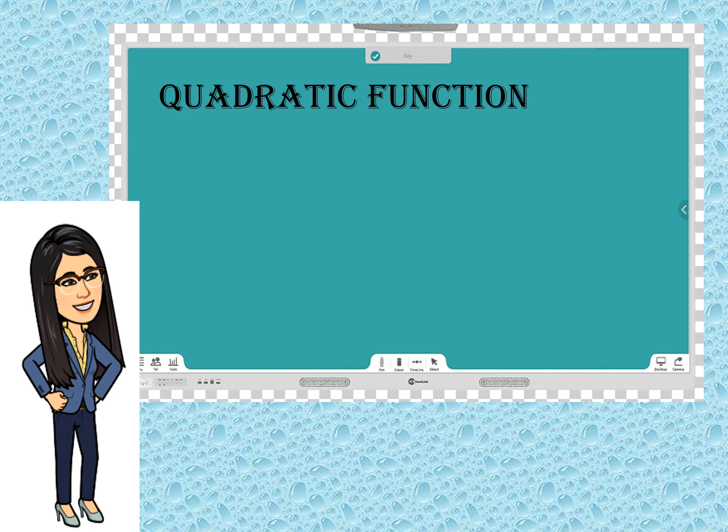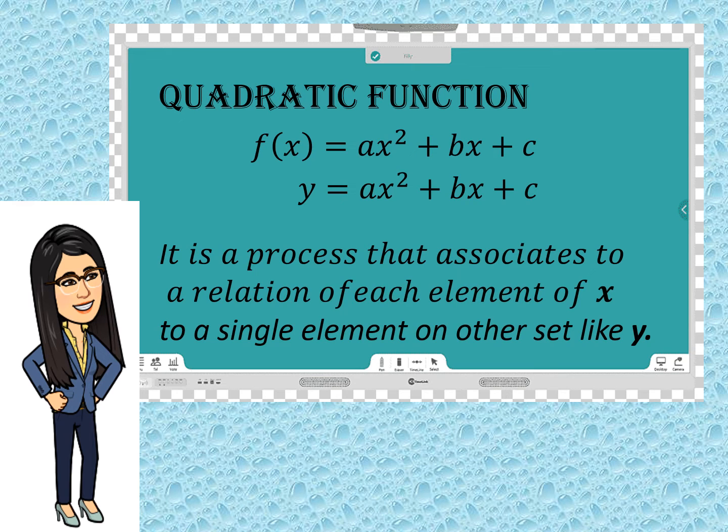Now, let us study the quadratic function. It can be written in the form of f(x) = ax² + bx + c, or y = ax² + bx + c. It is a process that associates to a relation of each element of x to a single element on the other set like y. So, there is a one-to-one relation between x and y.